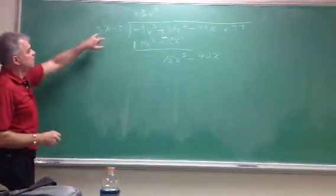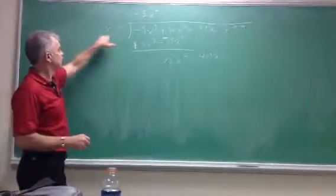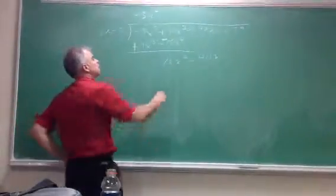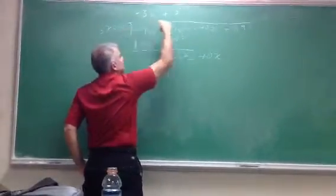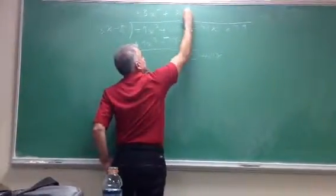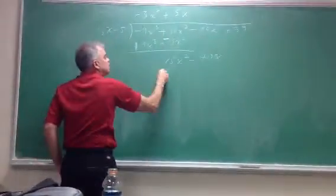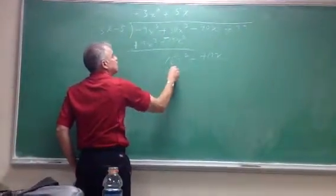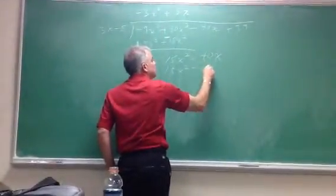And I say, okay, first into first again. So I say 3x into 15x squared. 3 times 5 is 15, I have an x, I need to get an x squared, so I have to have an x. So 5x times 3x is 15x squared, 5x times negative 5 is negative 25x.